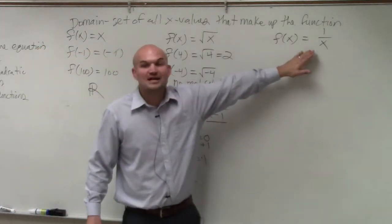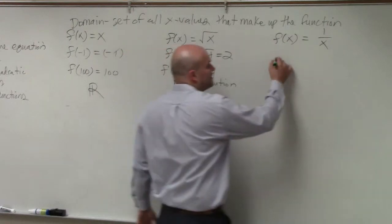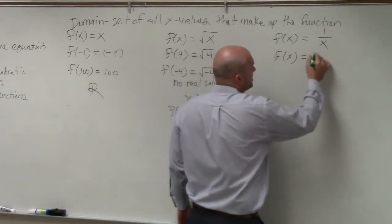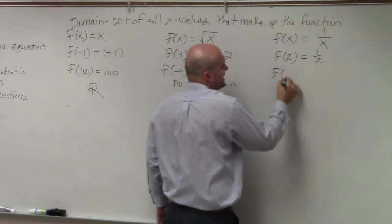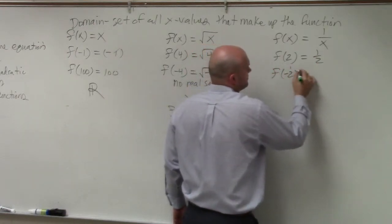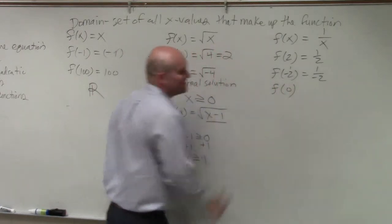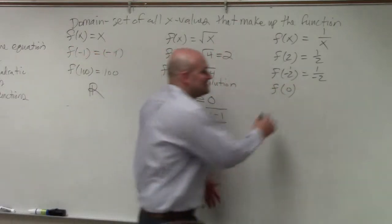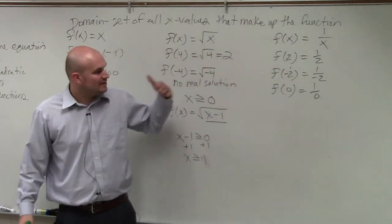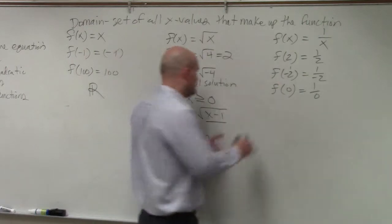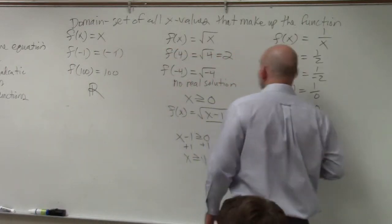Now going to a rational function. This is the reciprocal function here. We can plug in any number we want. For rational, we can plug in positives. We can plug in negatives, right? But what is the one number we cannot plug in, which I just wrote? Zero. It's 0. You cannot divide by 0, right? So when I'm saying what is the domain, the domain of this one is all real numbers except x cannot equal 0.